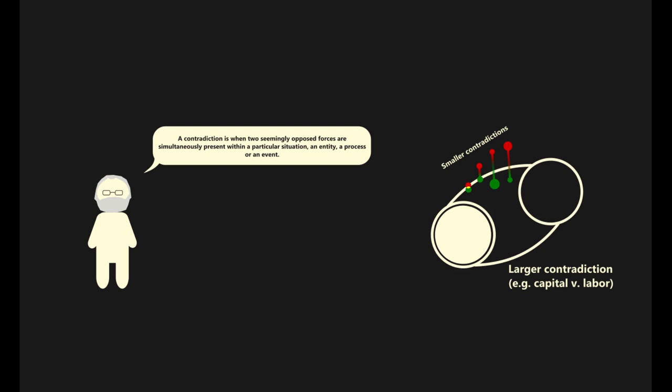For example, certain contradictions stretch far beyond the era of capitalism, as is the case with race and gender. Nevertheless, those contradictions have come to shape and be shaped by capitalism in unique ways. The process of capital accumulation was greatly dependent on the use of slave labor, as well as free domestic labor provided by the subjugated gender.